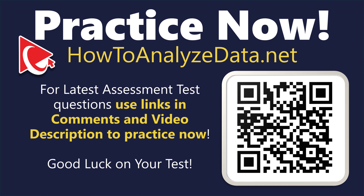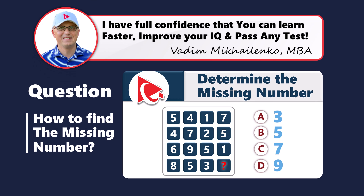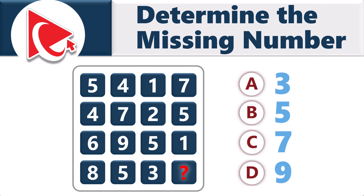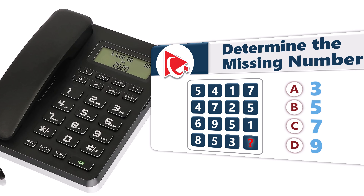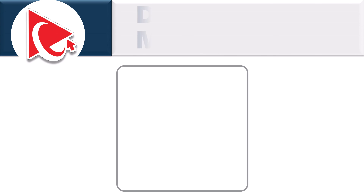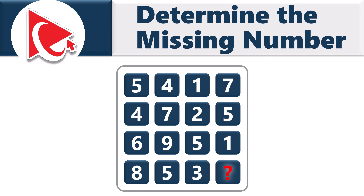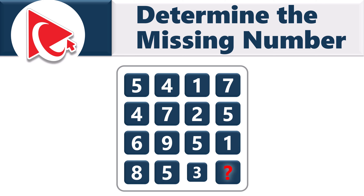This question reminded me of the old phone keypad, but solving it may not be as easy as pushing buttons. You're presented with a large square containing smaller squares with numbers. Starting from the upper left corner, the first row is: 5, 4, 1, 7. The second row: 4, 7, 2, 5. The third row: 6, 9, 5, 1. And the last row: 8, 5, 3, and the missing number.